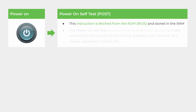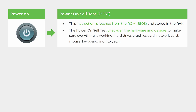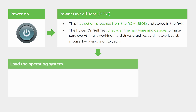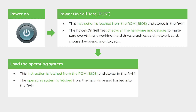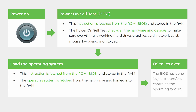The power-on self-test checks to make sure all the hardware and devices are working properly. Once confirmed that everything is fine, it goes back to the ROM for its next instruction: to load the operating system. This instruction is also fetched from the ROM, from the BIOS, and stored in the RAM. The operating system — whether Windows 10, macOS, iOS, Android, or whichever — is fetched from the hard drive and loaded into RAM. At this point the operating system takes over; the BIOS has done its job of starting up the computer.